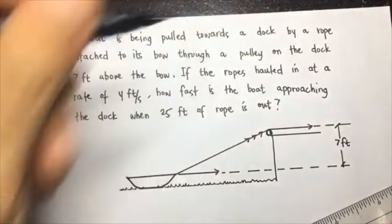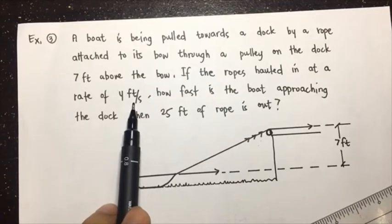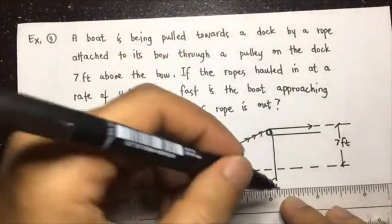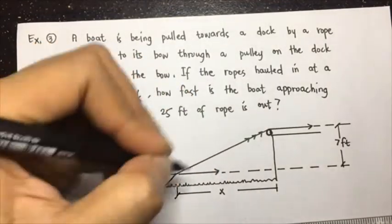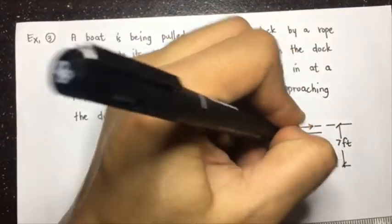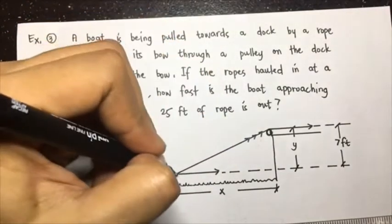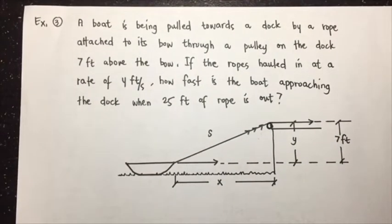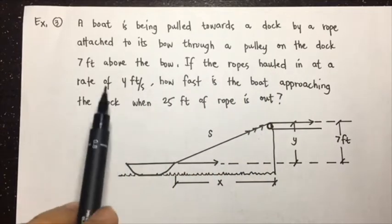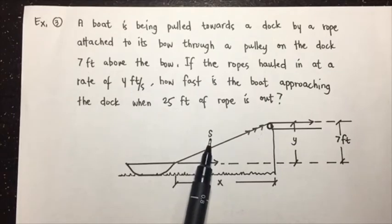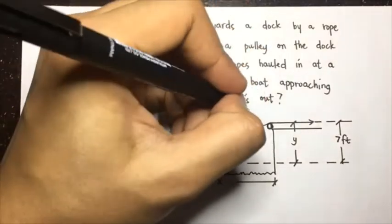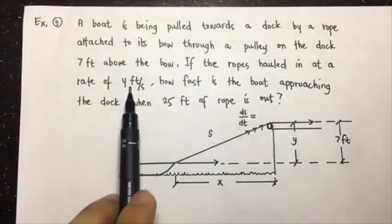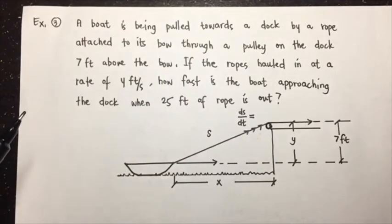Now let us assign the variables. The horizontal distance is x, the vertical distance is y, and the length of the rope at any time is s. The hauling rate of the rope is four feet per second, so that is the rate of change of the length of the rope — that is ds/dt.